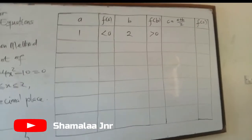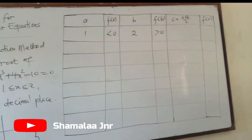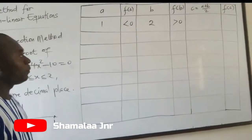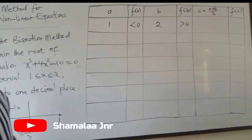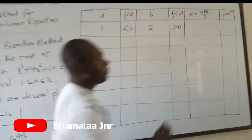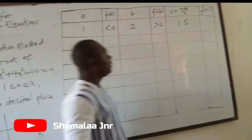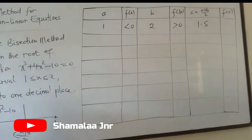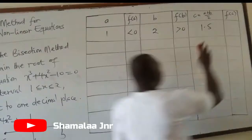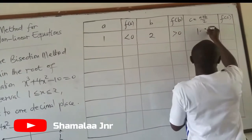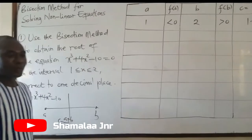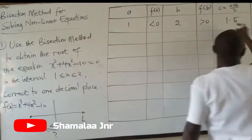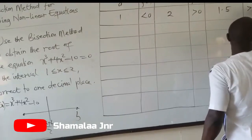Now you move ahead to find C, which is the midpoint of the two values 1 and 2. So 1 + 2 = 3 divided by 2 gives 1.5. Then you find the functional value of 1.5. When you do that, you see that the functional value of 1.5 is greater than 0.